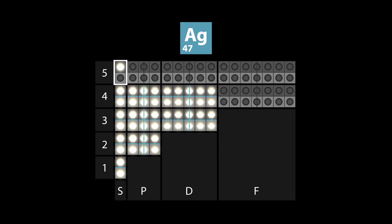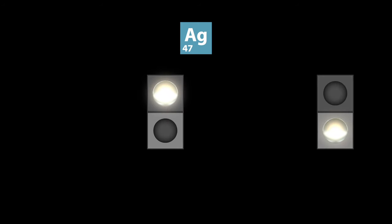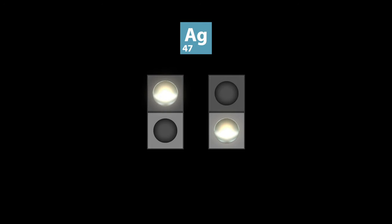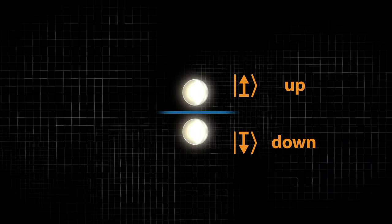There is only one unpaired spin, the spin of the 5s electron. It can be either in spin-up, or spin-down, or in any superposition of these two states.